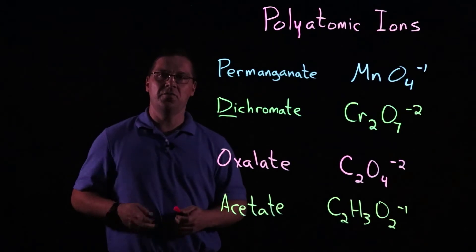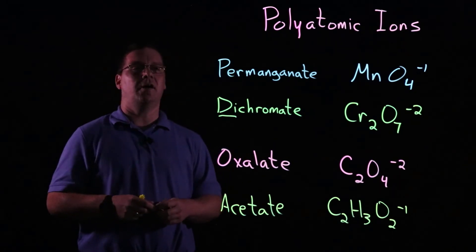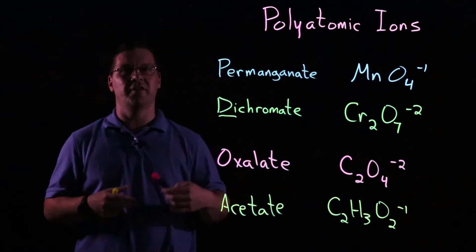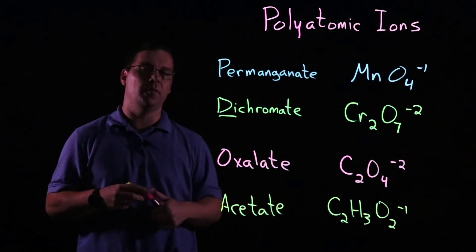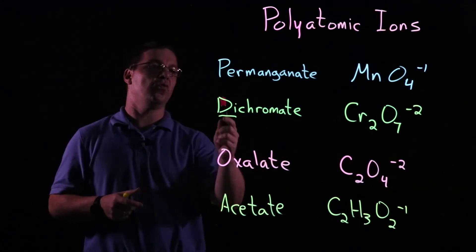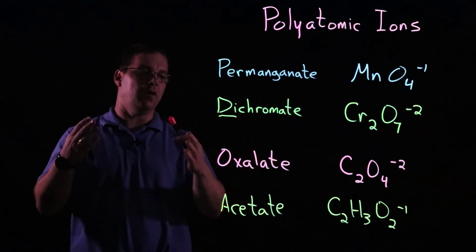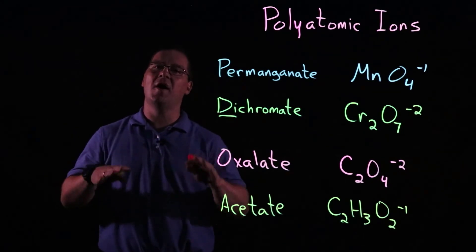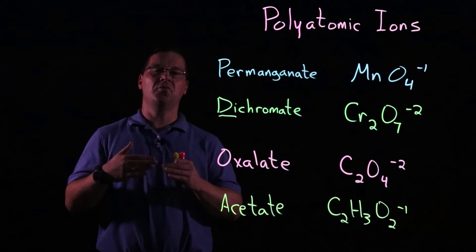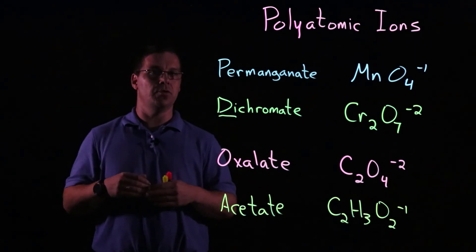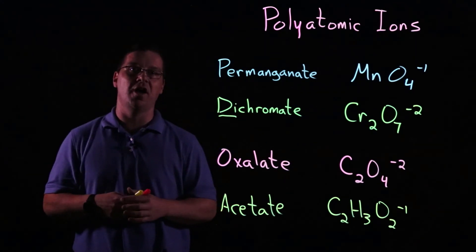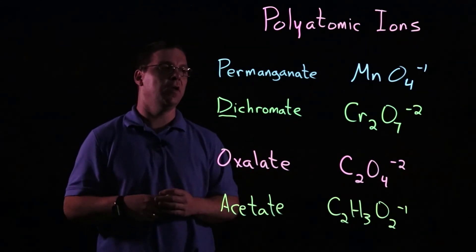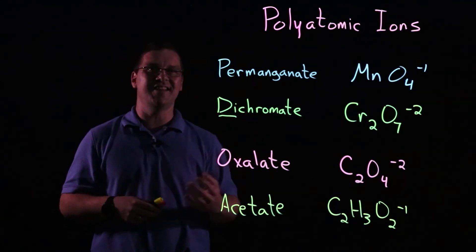So hopefully you found some of these tips to be helpful from the beginning where we talked about the ATE endings or if it ended with oxide, the placement of the oxygens, some of the prefixes, what they mean, all the way to maybe some of the goofier ways to remember some of the polyatomic ions. But bottom line, whatever method you use to help you learn the polyatomic ion formulas, it's really going to be crucial that you learn these and are able to recognize them just as easily as